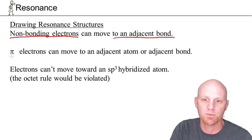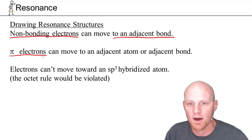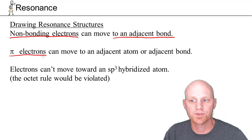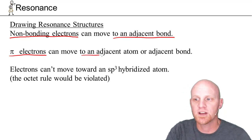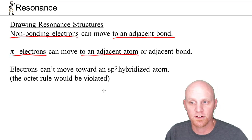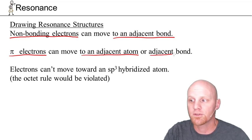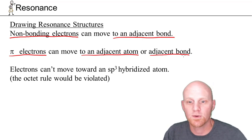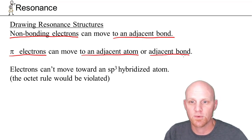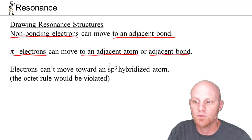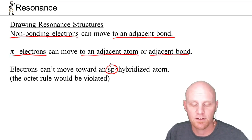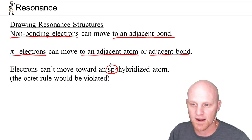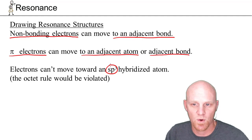The second type of electrons we can move are pi electrons, which are only present in double or triple bonds. They have options: they can move to an adjacent atom — either of the ones they're part of the double bond to — or they can go a little bit further to the adjacent bond. One thing to keep in mind, though: regardless of how you move electrons, you can't move them toward an sp3-hybridized atom.